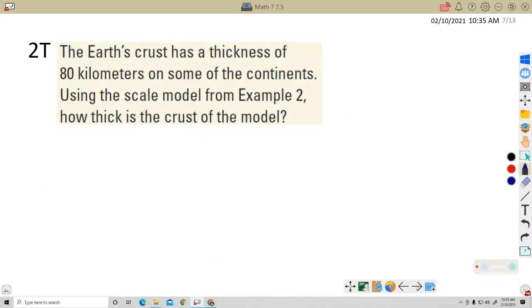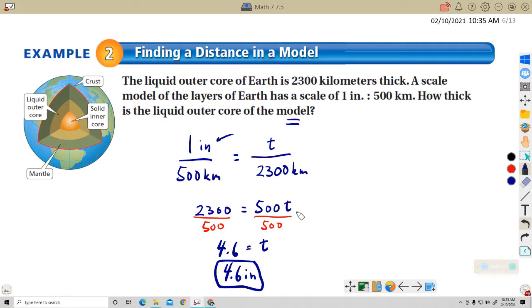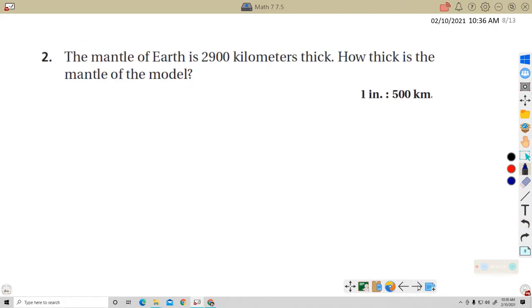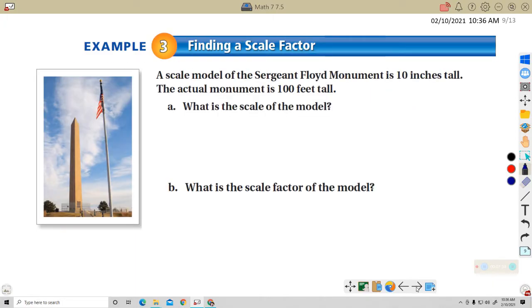Try this one. Now, this one is describing the thickness of the crust on some continents. And let's pull back this so you can see it again. It's 1 inch is 500 kilometers. 1 inch equals 500 kilometers. So figure out the thickness of the crust on the model again. And I will join you on this example here.